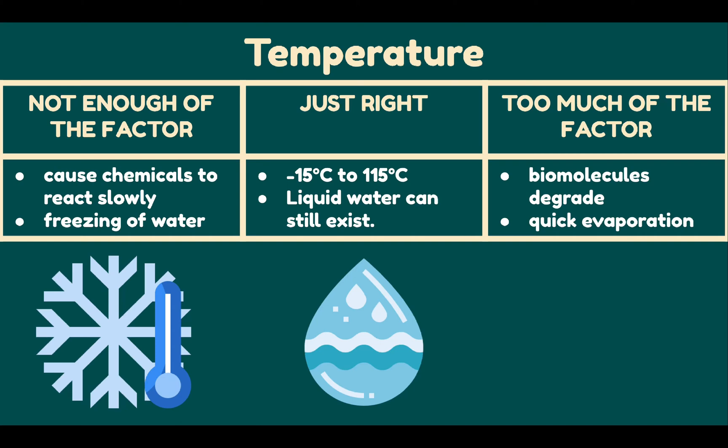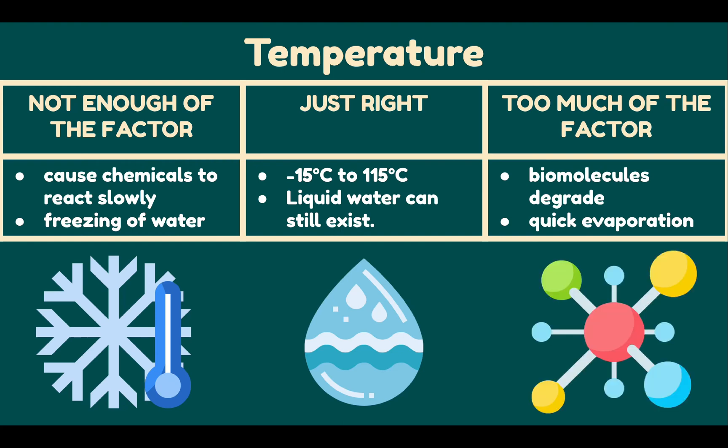In the solar system, only Earth's surface is in this temperature range. In the subsurface, the interiors of solid planets and moons may also be in this range. Too much temperature — at about 125°C — causes protein and carbohydrate molecules and genetic material such as DNA and RNA to start to break apart. High temperatures also cause the quick evaporation of water.